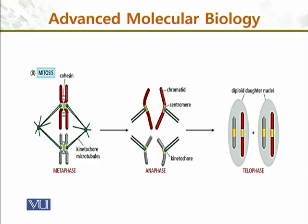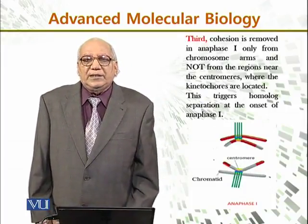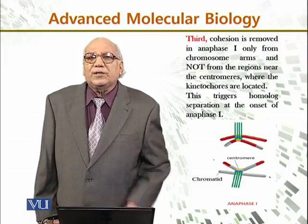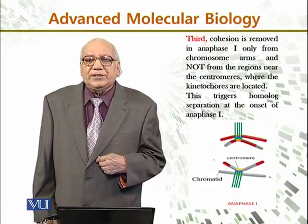Similarly, in mitosis, what happens is that cohesion between chromosomes is removed from the spindle, and the chromosomes are separated together, producing two diploid sister nuclei.